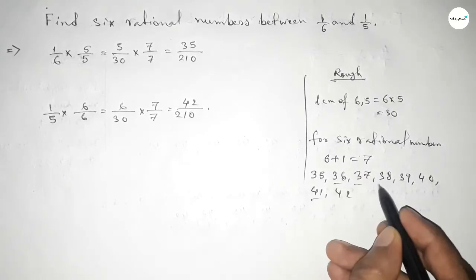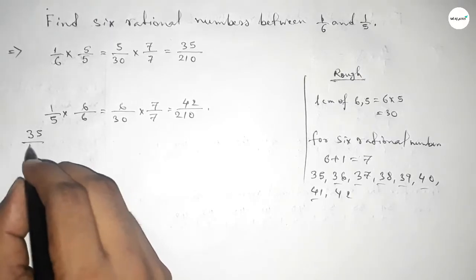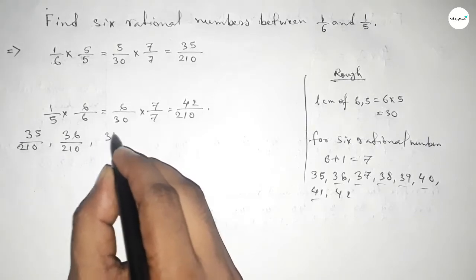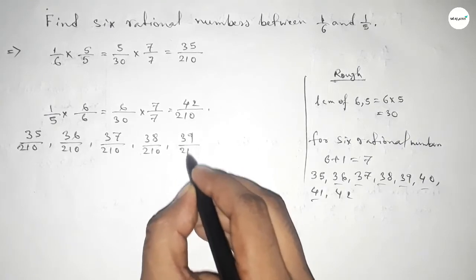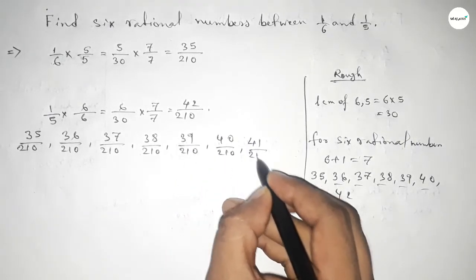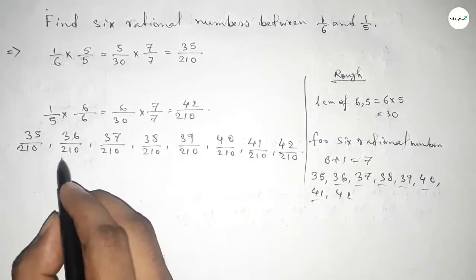By these six natural numbers, we can form six rational numbers: 35/210, 36/210, 37/210, up to 42/210. From these, we identify the required six rational numbers.